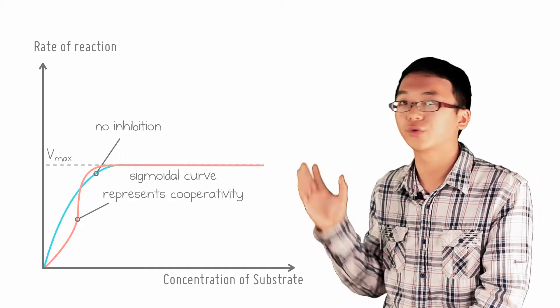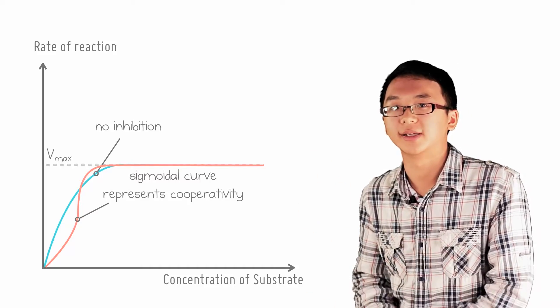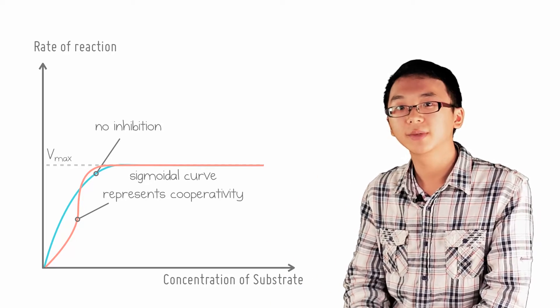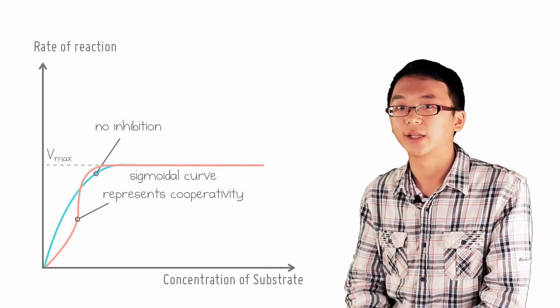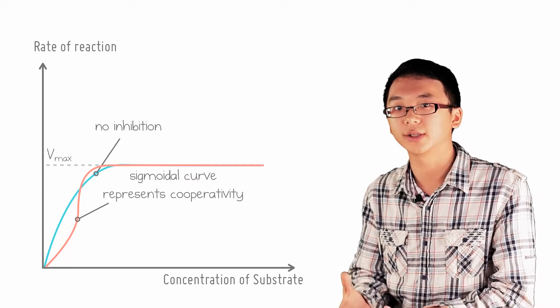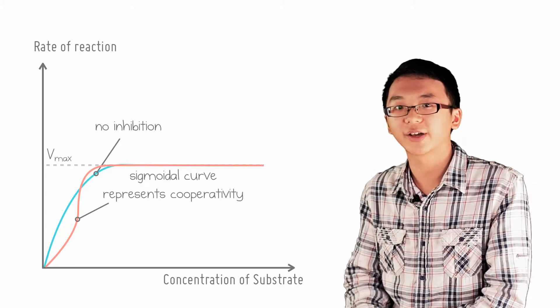Therefore, the initial gradient is gentle as binding is more difficult at the start. However, as more substrates bind to it, the ease of binding increases and the rate of reaction increases at a faster rate, until there's too much crowding near the end, which makes it difficult to bind.